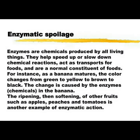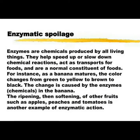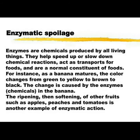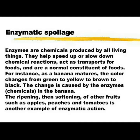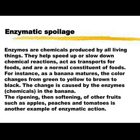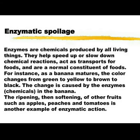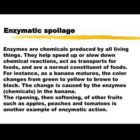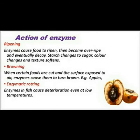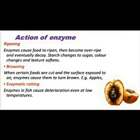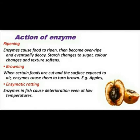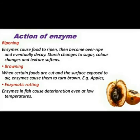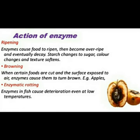The third cause is enzymes. Enzymes are chemicals produced by all living things that help speed up or slow down chemical reactions and act as catalysts. For instance, as a banana matures, its color changes from green to yellow to brown to black — this change is caused by enzymes. Similarly, the ripening and softening of apples, peaches, and tomatoes is due to enzymatic action. Enzymes cause food to ripen, then become overripe, and eventually decay — starch changes to sugar, color changes, and texture softens. When certain foods are cut and the surface is exposed to air, enzymatic browning occurs, as seen with apples.